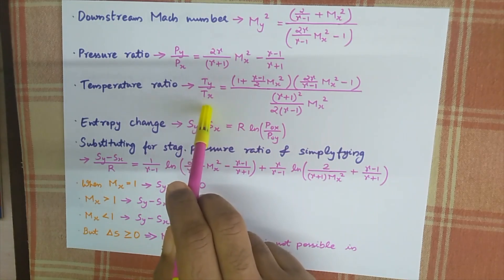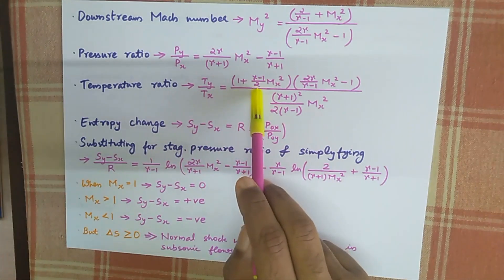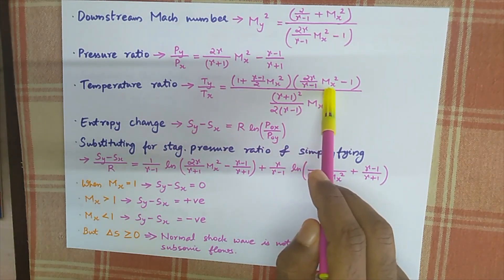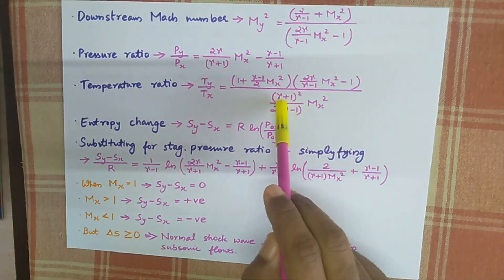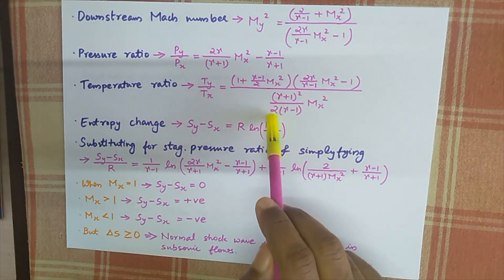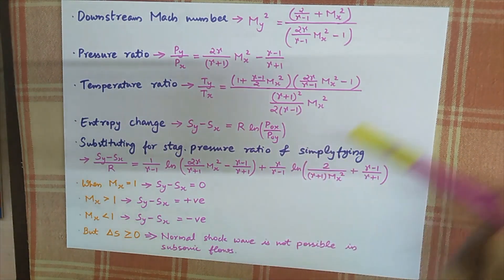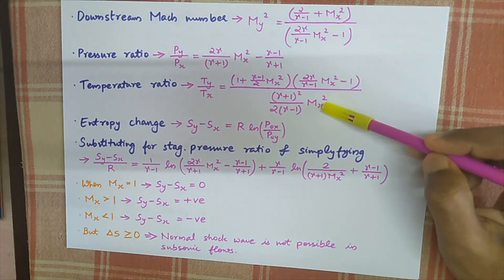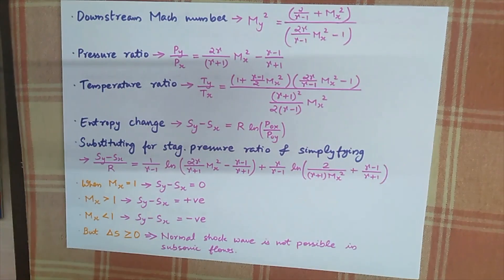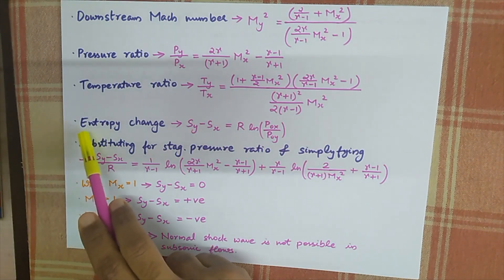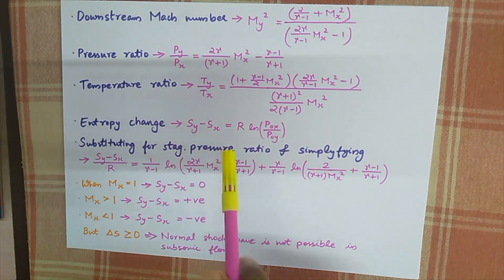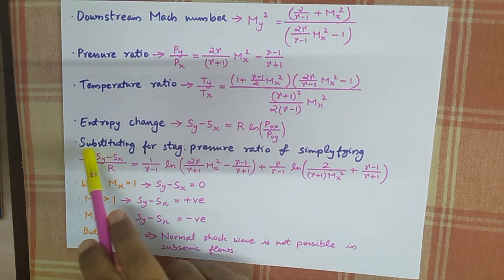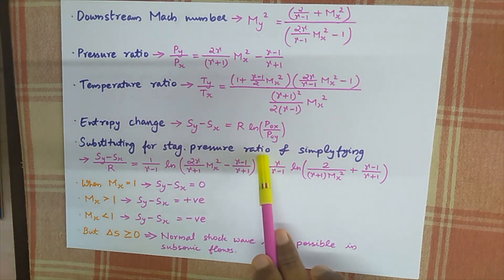The temperature ratio is equal to (1 + (gamma-1)/2 * Mx²) * (2*gamma/(gamma-1) * Mx² - 1), whole divided by ((gamma+1)² / (2*(gamma-1)) * Mx²). Here, suffix x denotes upstream of a shock wave and suffix y denotes downstream of a shock wave.